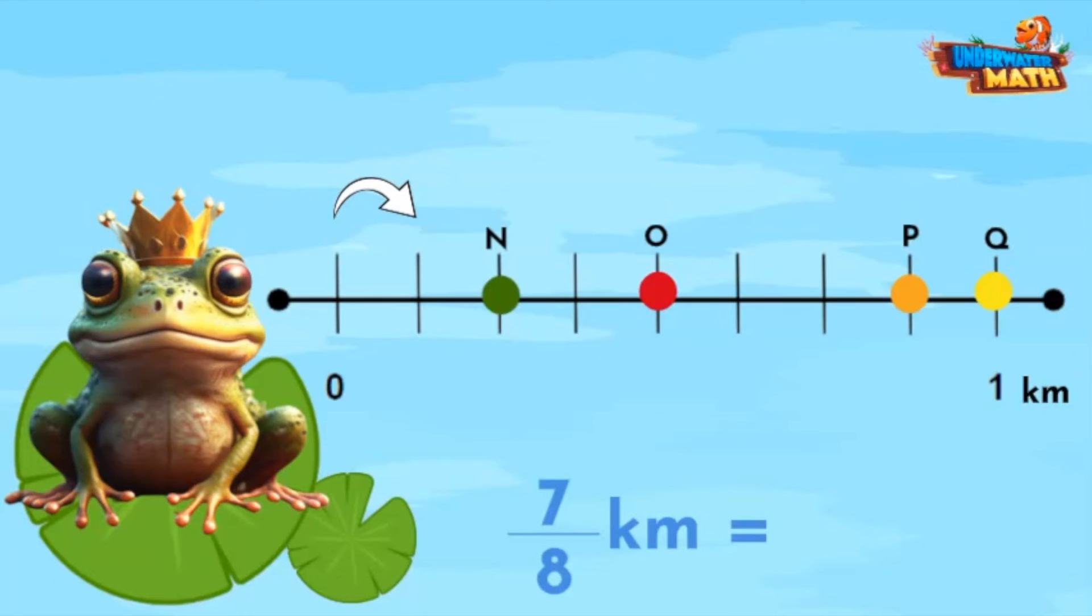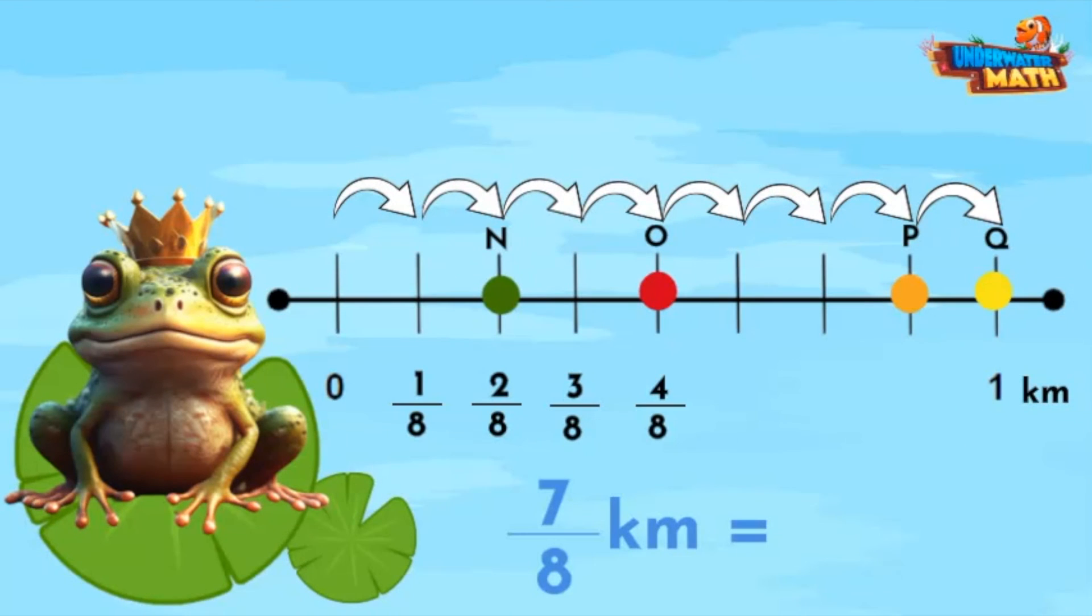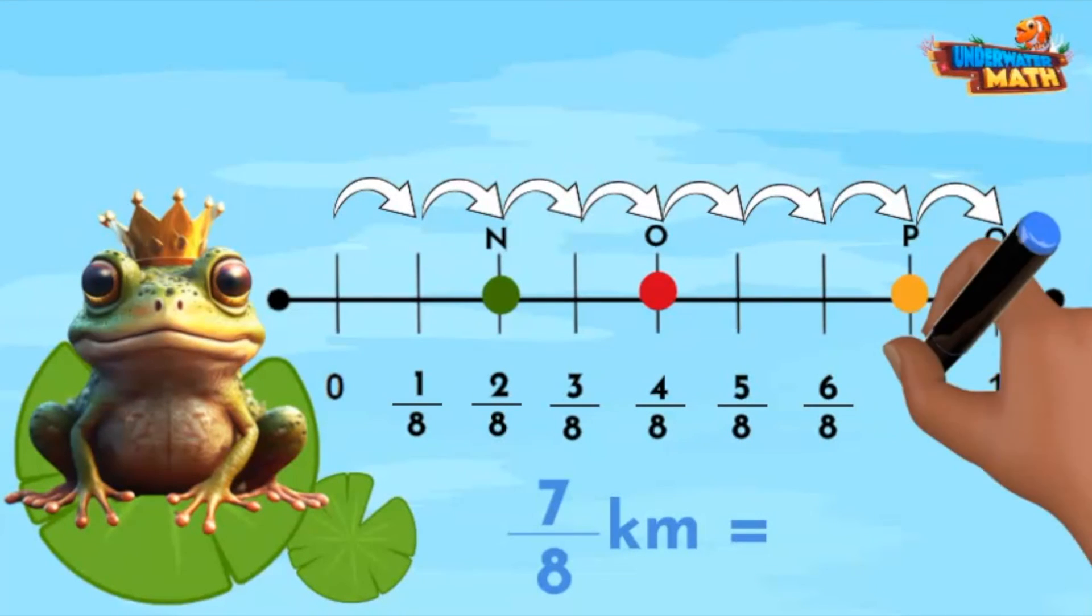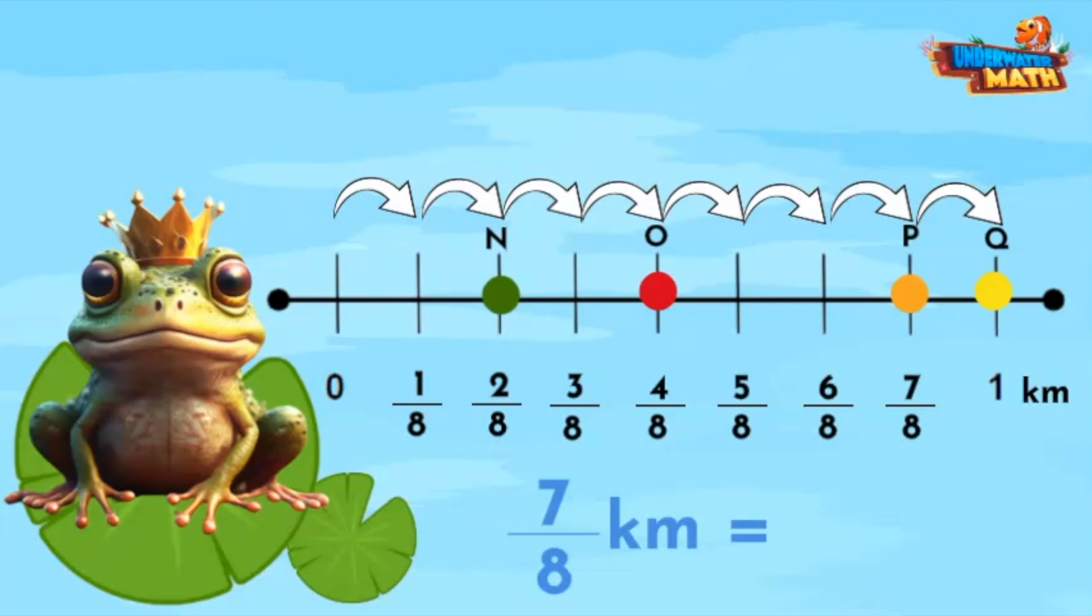Let's first hop all the hash marks from zero to one kilometer. One, two, three, four, five, six, seven, and eight. This number line is divided into eighths. Let's label the blank hash marks. One eighth, two eighths, three eighths, four eighths, five eighths, six eighths, and seven eighths. It looks like seven eighths is represented by point P on this number line.